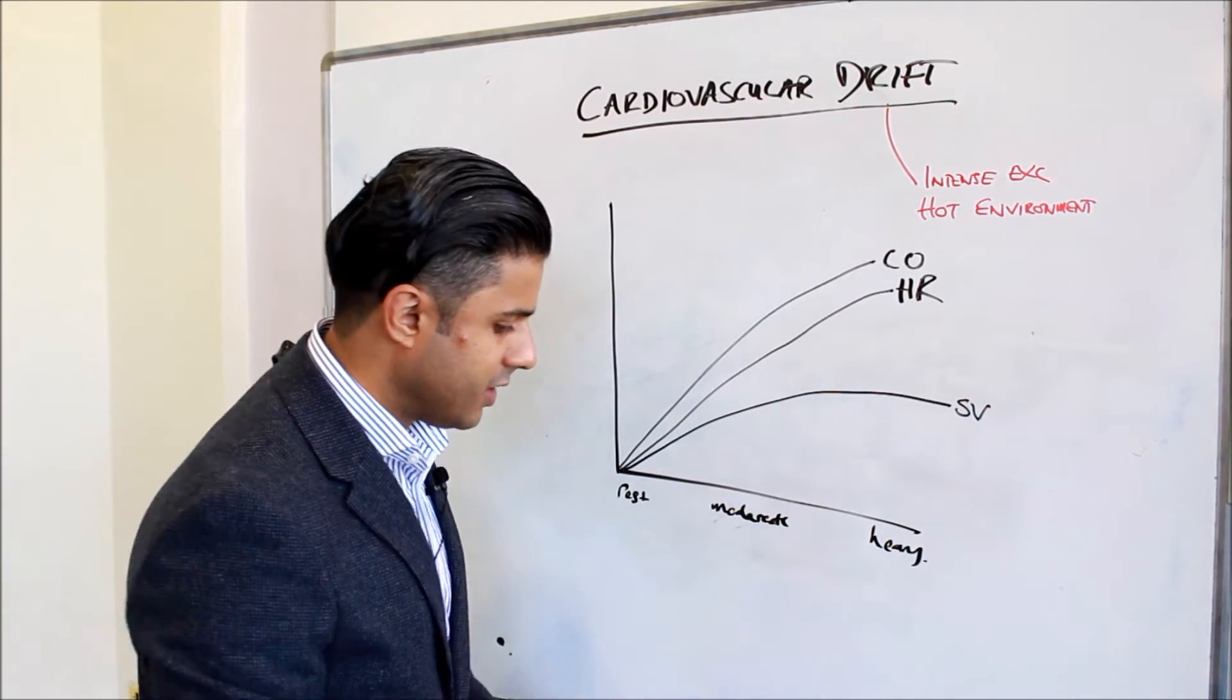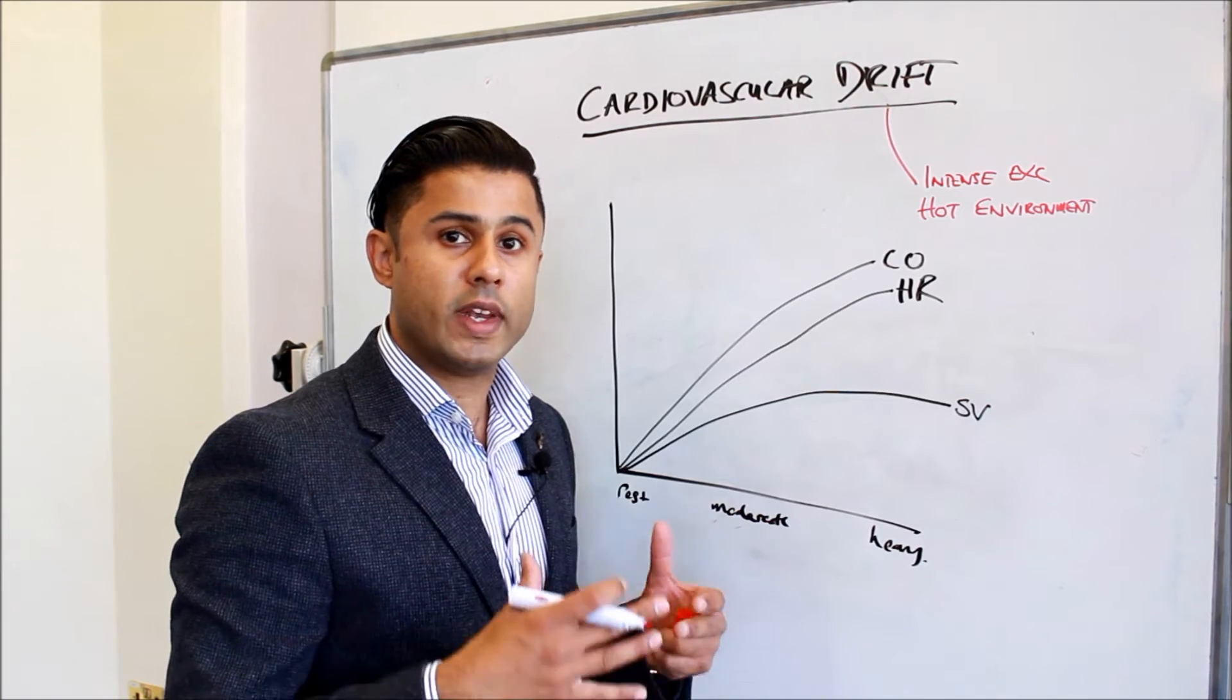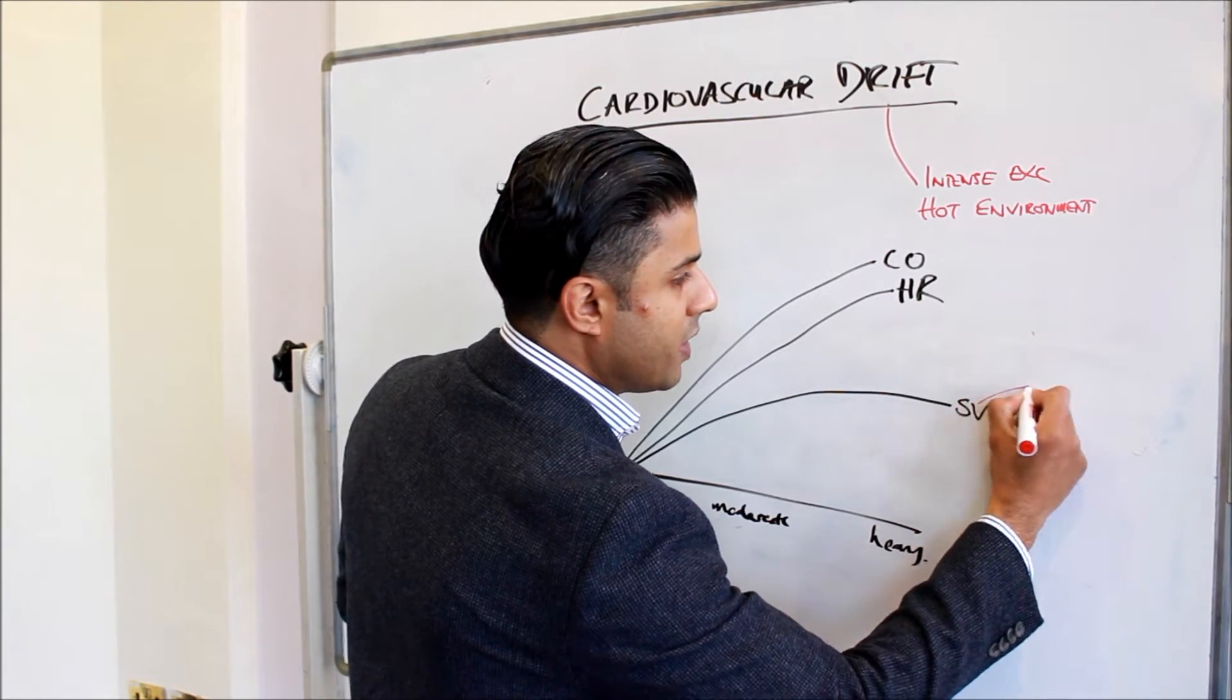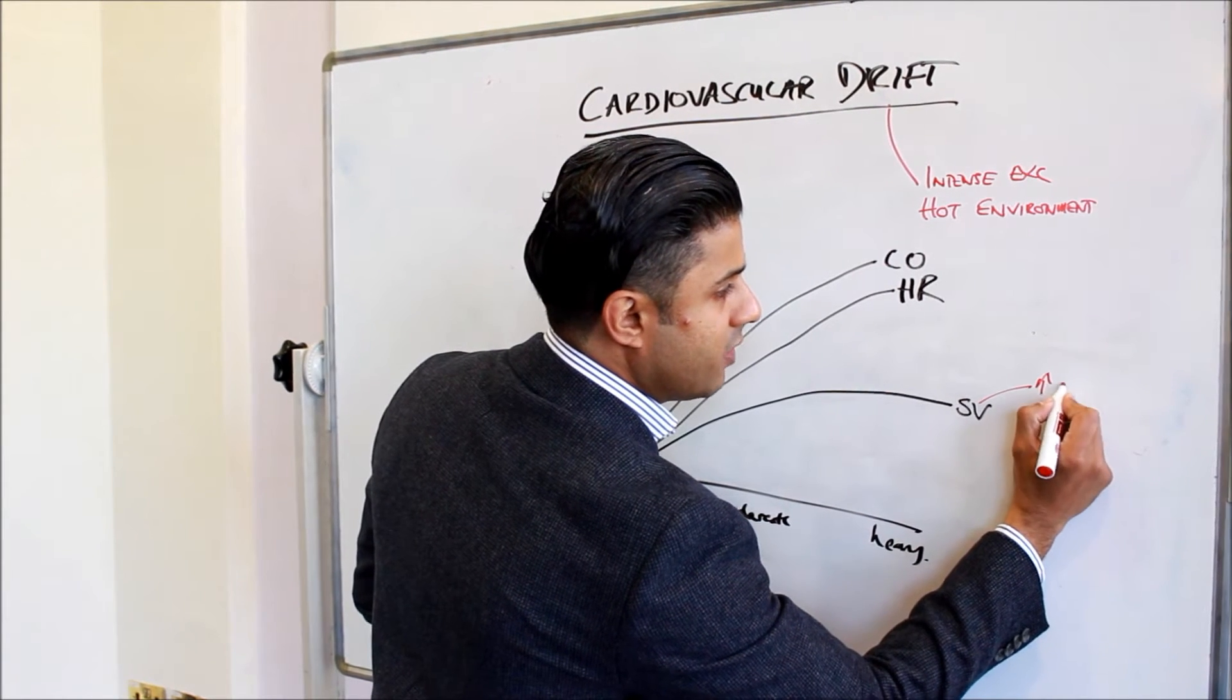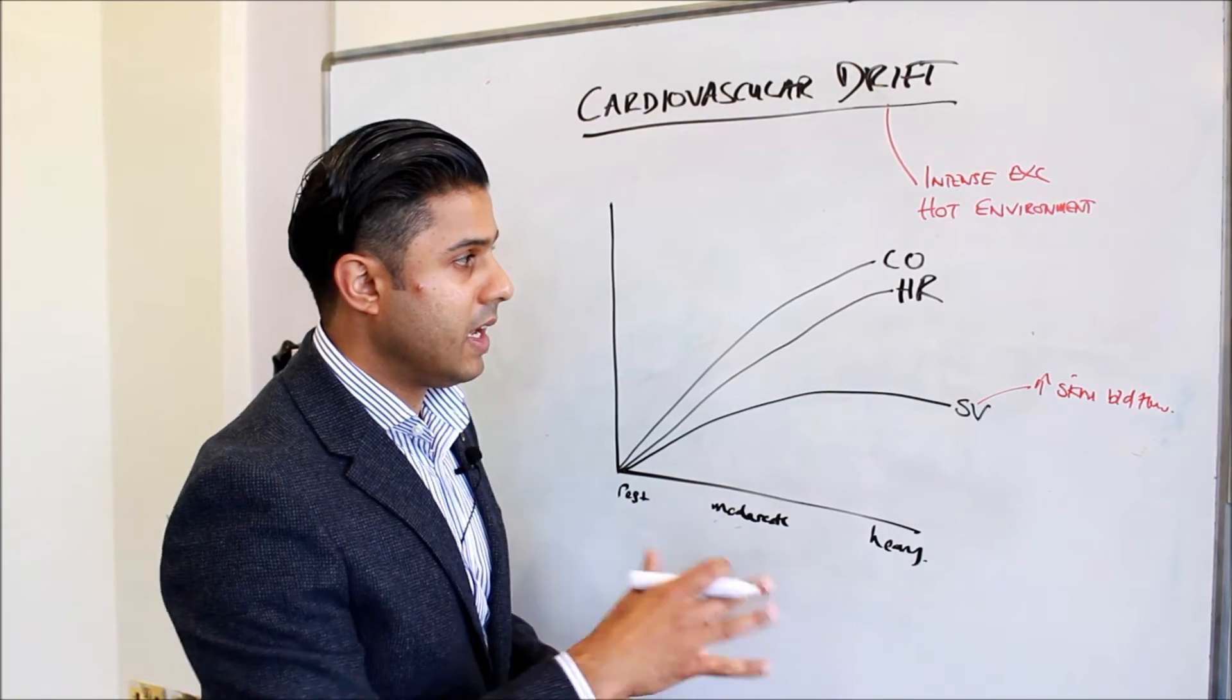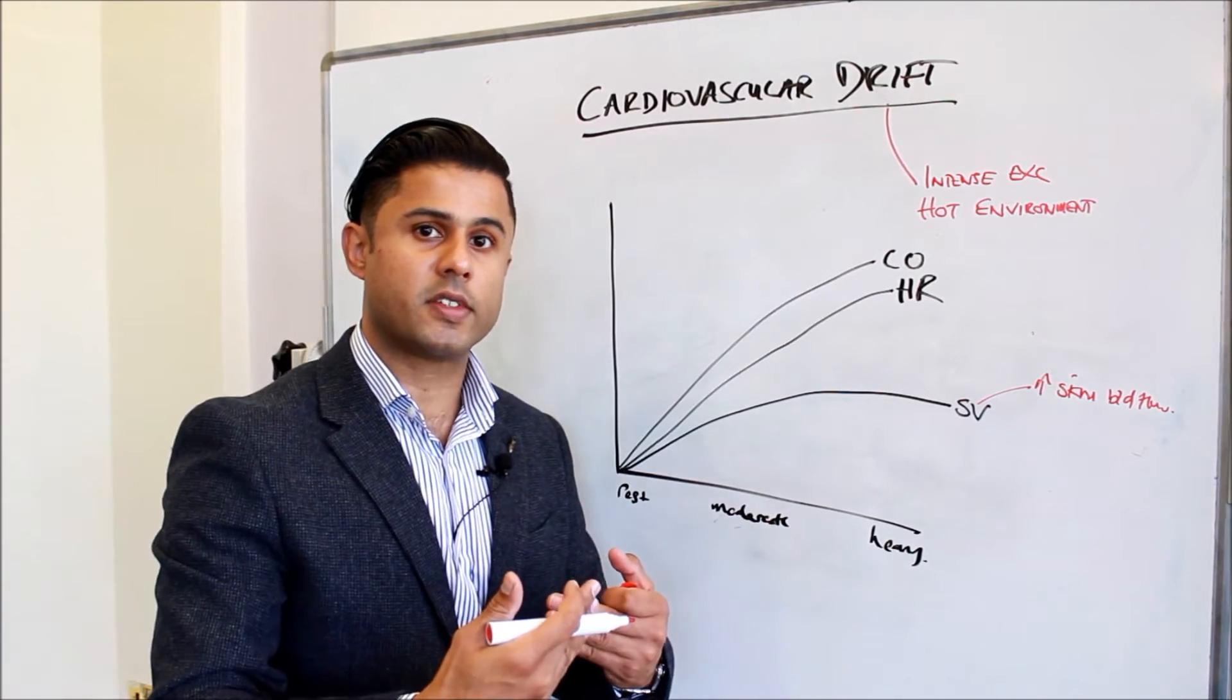The question is why do we get this reduction in stroke volume? The straightforward answer is that most of our blood is going to the skin because we're in a hot environment. We need to cool the blood, we need to cool the body. So we have a stroke volume which drops because all of the blood has gone to the skin. You've got increased skin blood flow that causes a drop in the stroke volume.